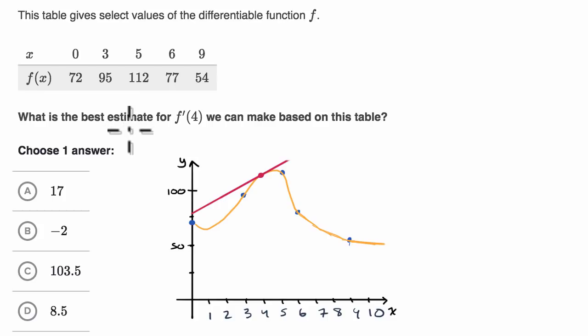So what we generally do when we just have some data around a point is let's use the data points that are closest to that point and find slopes of secant lines pretty close around that point. And that's going to give us our best estimate for the slope of the tangent line. So what points do we have near f of four, or near the point four comma f of four? Well, they give us what f is equal to when x is equal to three. They give us this point right over here.